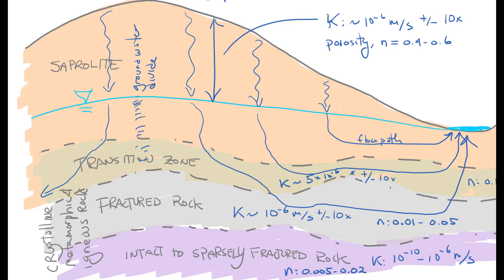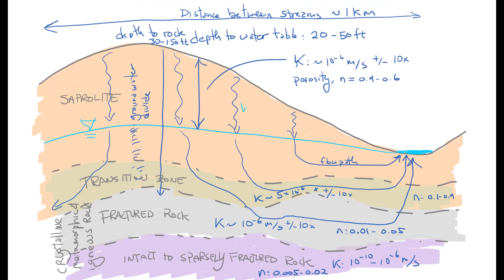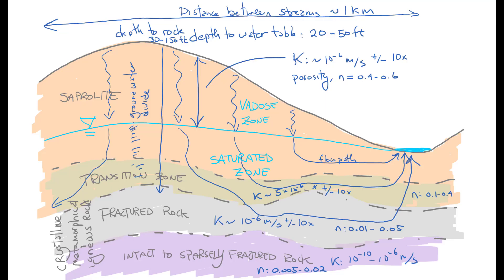We're also interested in the dimensions. The depth of the water table in the Piedmont is going to be roughly 20 to 50 feet. The depth of the rock will be greater than this, 30 to 150 feet or so. The distance between streams is important because this sets the boundary conditions for the flow system. In the Piedmont, the distance between streams is approximately 1 kilometer. We're also interested in recognizing the vadose zone and the saturated zone, as these are basic components of the overall hydrologic flow system.